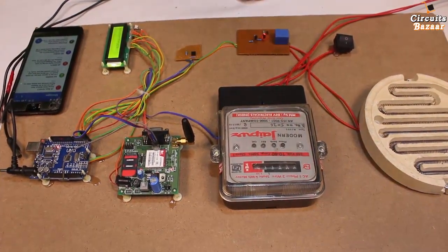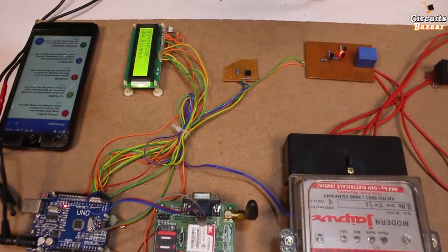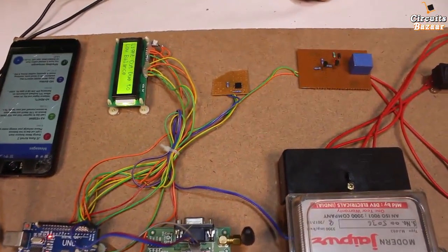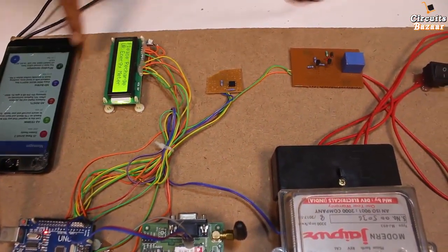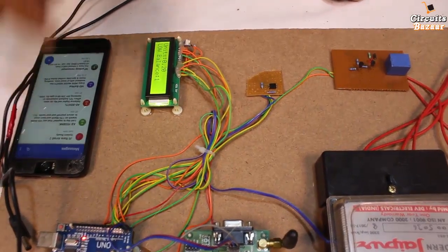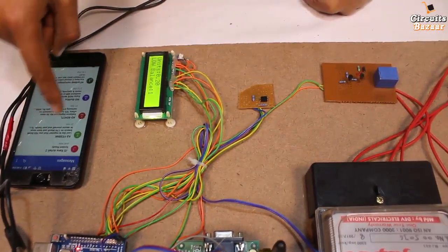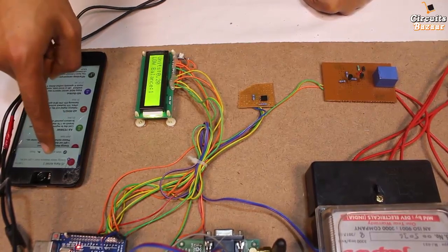So message on the LCD is, it is just finding if the GSM module is ready or not. Message on the mobile phone, system ready. And second message will also come.